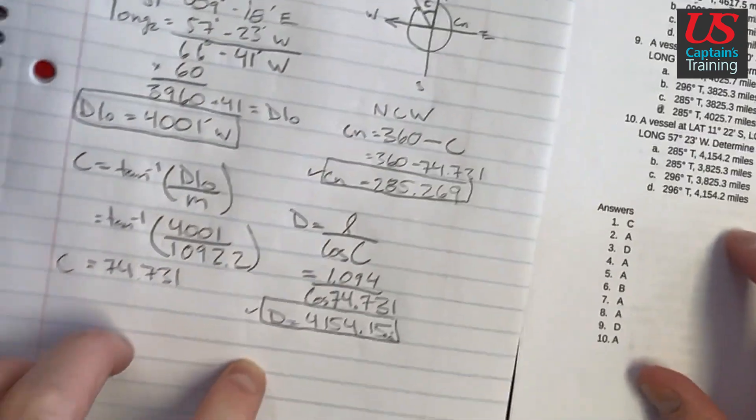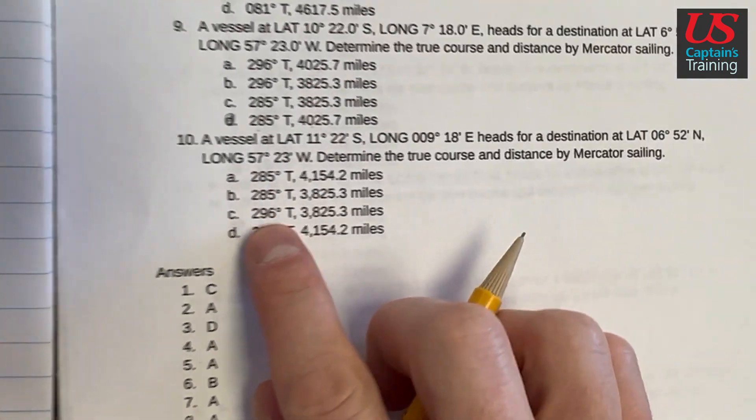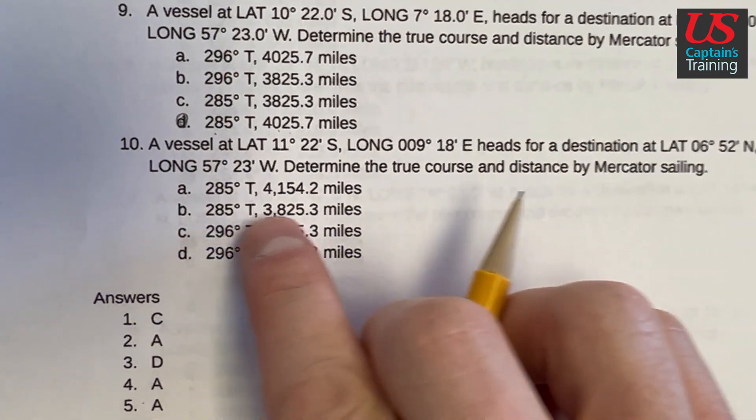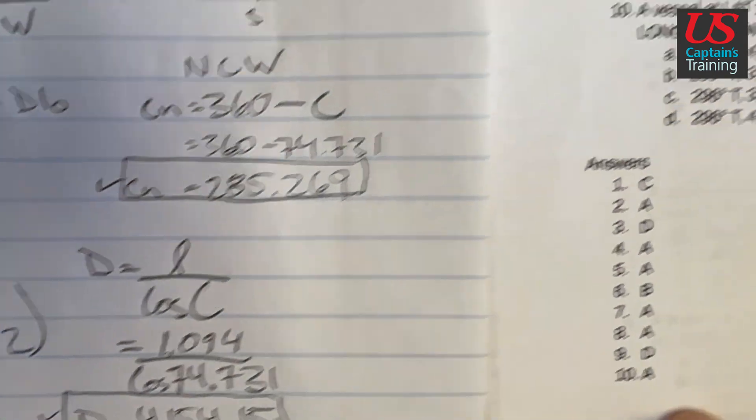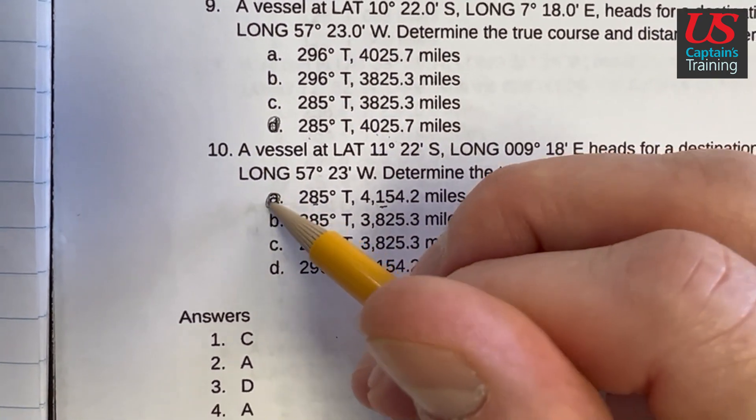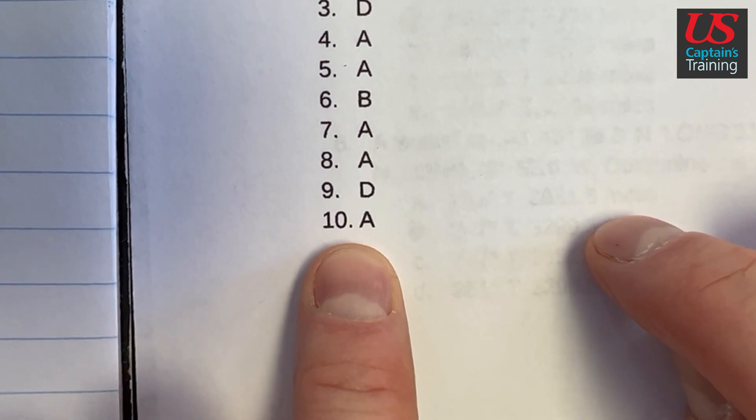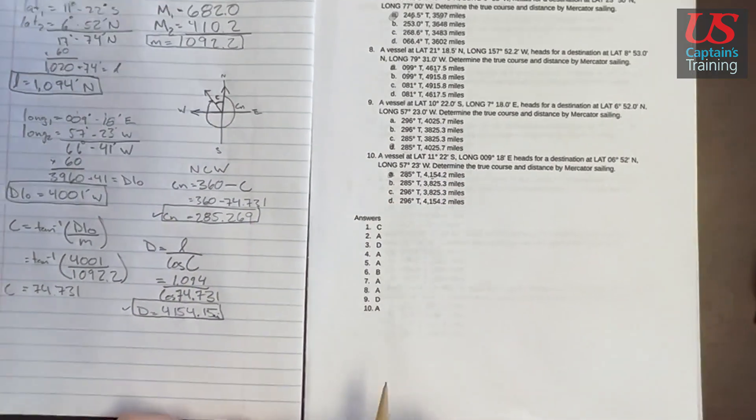So let's check this out. It's at 285.2. Where are we? 285, here's the two at 285. But which one has closer distance? 4,154. Oh, look at that. We nailed this one. A is what we're guessing. We get this. 10 is A. And that's Mercator Sailing practice problem 10.